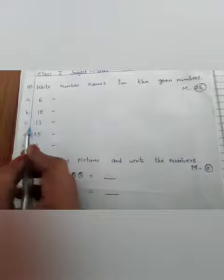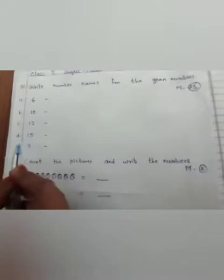Children, like this, part B, 10. You have to write spelling. Children, C, 12. D, 15. E, 9. Children, first you have to write question. Then you have to write answers.